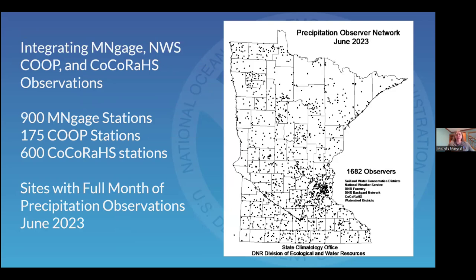What our partners and the National Weather Service do is take existing networks across the state and combine them to increase the density of precipitation reports. Here's a map from the state climate office that incorporates three networks: MNGAGE, Co-op National Weather Service Cooperative Weather Observers — the longtime climate stations spaced about every 20 miles — and CoCoRaHS stations. You can see the increase in density across the state. This map includes observers that reported every day, from June of 2023.